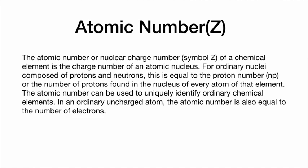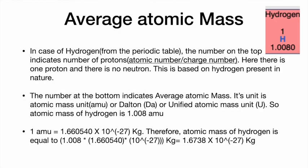Next, if you see the average atomic mass — here we will take the case of hydrogen. In the periodic table, the atomic number is usually on the top (also called the charge number, representing the number of protons), and the atomic mass is written on the bottom. The atomic mass of hydrogen is 1.008.